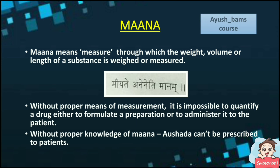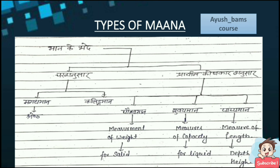Without proper knowledge of Mana, Aushadha can't be prescribed to patients. Types of Mana — according to Charaka, these are divided into two types: Magadha Mana and Kalinga Mana.